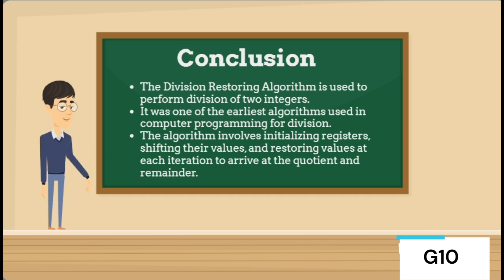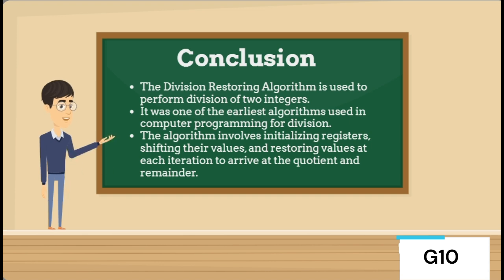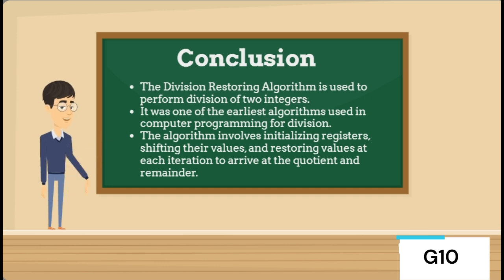In conclusion, there are three main points. First, the division restoring algorithm is used to perform division of two integers. Second, it was one of the earliest algorithms used in computer programming for division. Third, the algorithm involves initializing registers, shifting their values, and restoring values at each iteration to arrive at the quotient and remainder.